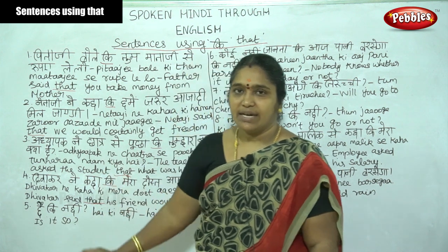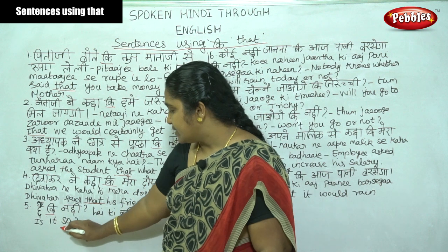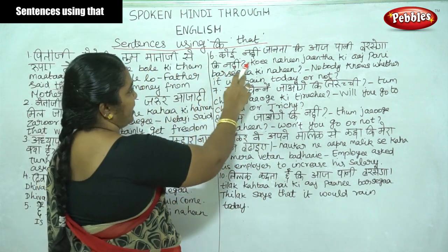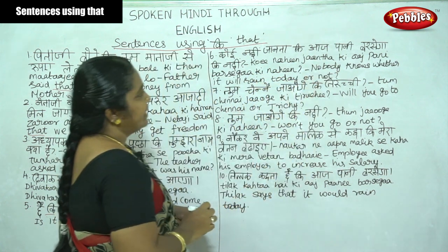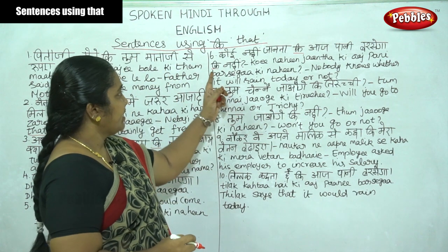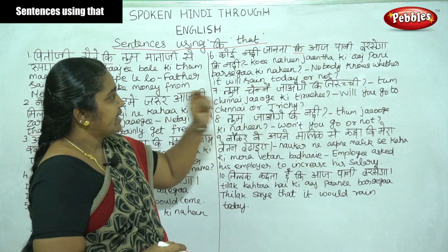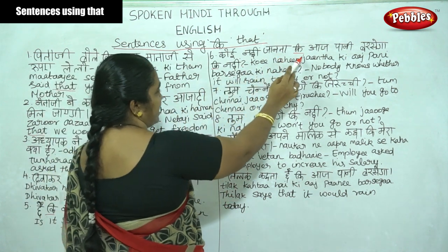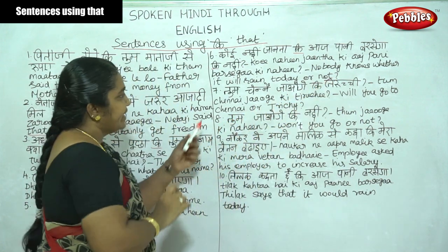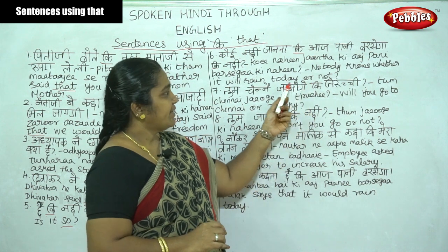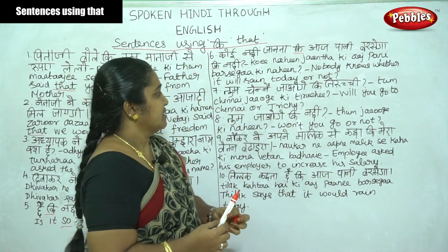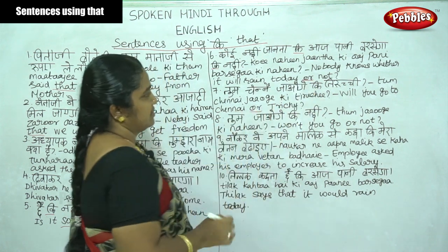Hai ki nahi — is it so? Here 'ki' can also mean 'or' or 'whether'. Koi nahi janta ki aaj paani barasega ki nahi — nobody knows whether it will rain today or not. Here the conjunction 'ki' in English corresponds to 'or' or 'whether'.